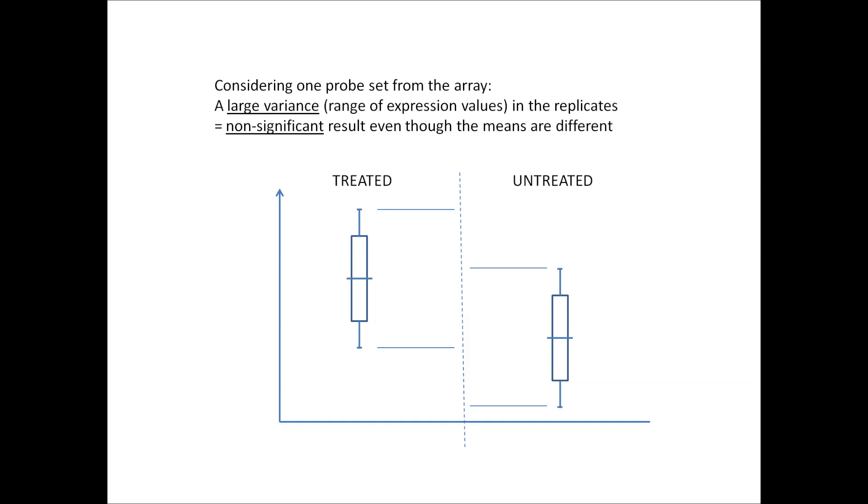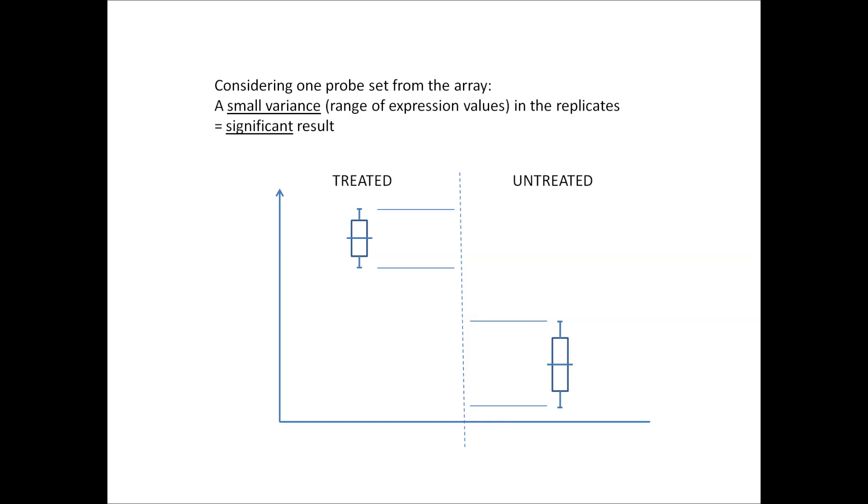The difference between the means of the sample may be large, but if so is the overall spread or variance of the expression values, giving a non-significant result. Whereas, other samples may have a small difference in the mean expression, but low variance indicates that the genes in the samples are significantly expressed when treated.